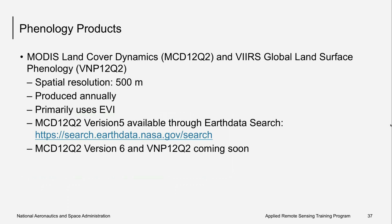Both MODIS and VIIRS have phenology products available for download through Earth Data Search. There are multiple spatial resolutions, but the most commonly used is the 500 meter. These 500-meter resolution images are produced annually, and they both primarily use the EVI. The MODIS version 5 is currently available, and version 6 along with the VIIRS phenology product will be coming soon.